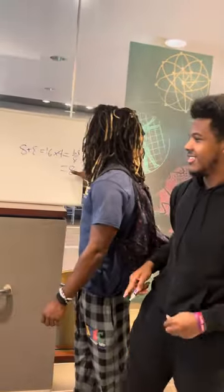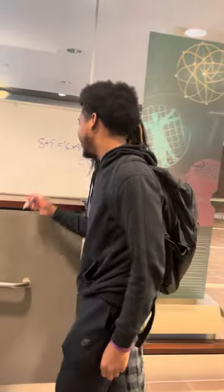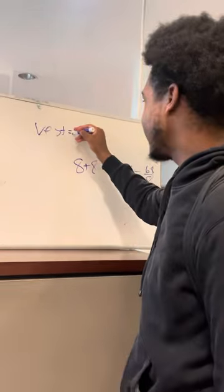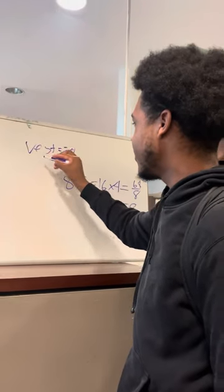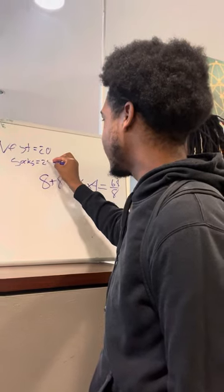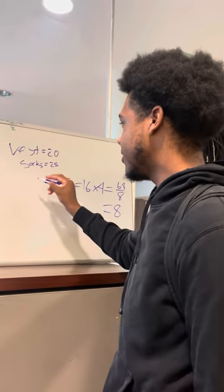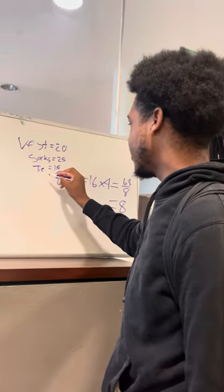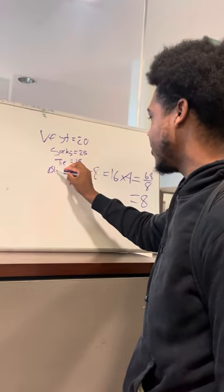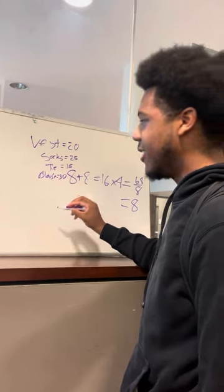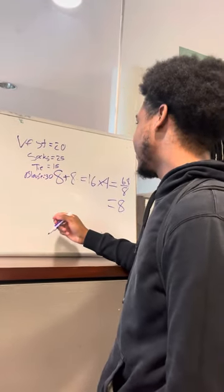So a vest cost $20, socks cost $25, a tie cost $15, and a blouse cost $30. Using this method, how much would a pair of underwear cost?